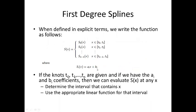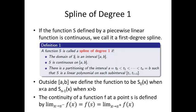So, when they're defined in explicit terms, we write the function for the spline as follows. Basically, this is a piecewise linear function, where each piece s of x is a linear polynomial. Now, if the knots t0, t1, through tn are given, and if we have the a sub i and b sub i coefficients, then we can evaluate s of x at any x. Basically, determine the interval that contains it, which one of these intervals contains it, and then use the appropriate linear function for that interval.